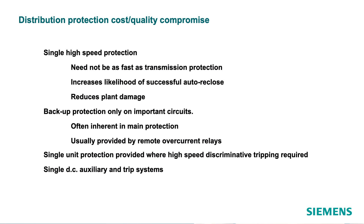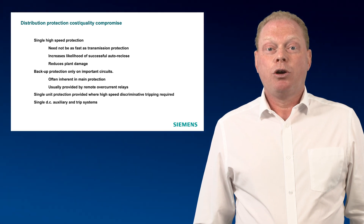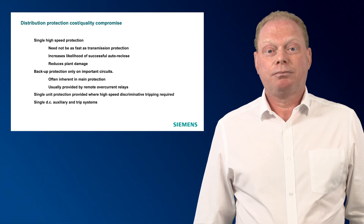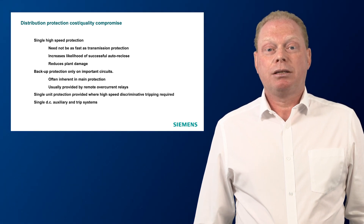In a distribution network, there is a compromise between the cost and quality of the protection system. Distribution protections are not usually duplicated as on a transmission system and as system stability is not a major concern, they also don't need to be as fast. A single protection relay is often used per circuit with integrated backup protection. Further backup protection is provided by remote overcurrent relays. Where high-speed discriminative tripping is required, this is usually provided by single unit protection such as a transformer differential device.